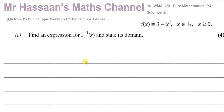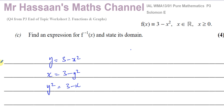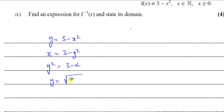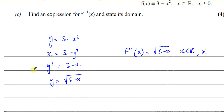Now part (c) says find an expression for the inverse function and state its domain. To find the inverse, we let f(x) = y, so y = 3 - x². Then we swap x and y: x = 3 - y², giving y² = 3 - x, so y = √(3 - x). We only consider the positive square root because the domain was restricted.